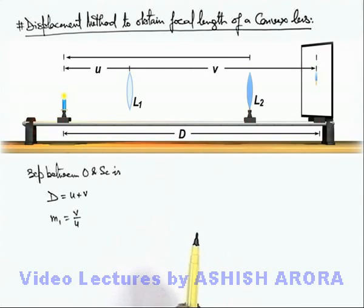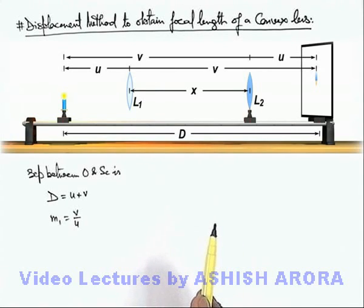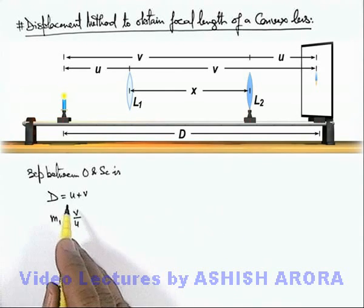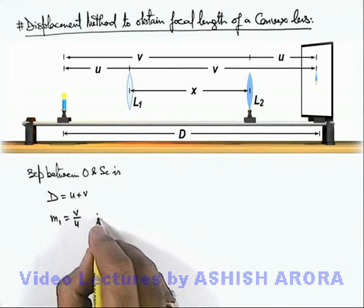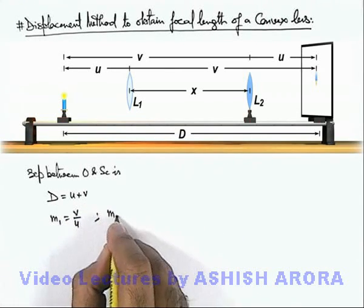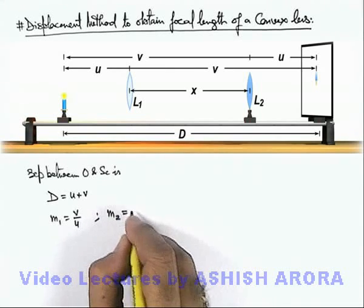Now object is located at a distance v and image is produced at a distance u, or the separation between screen and lens is u. Then also image will be produced. So we can state in another situation D will remain u by v, and in second case the magnification produced for the sharp image will be u by v.